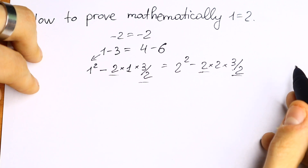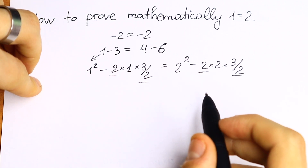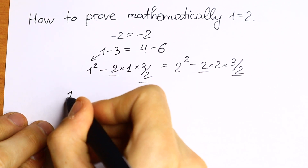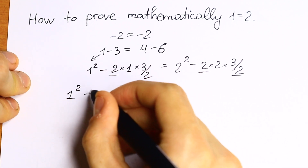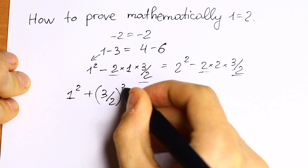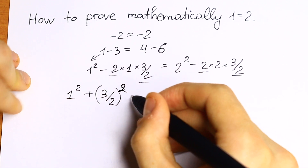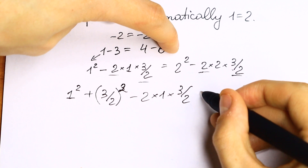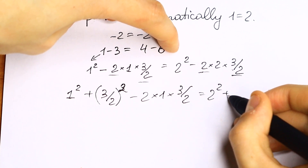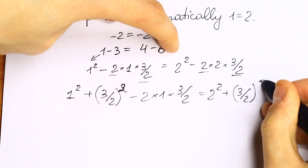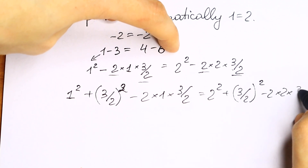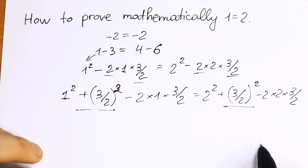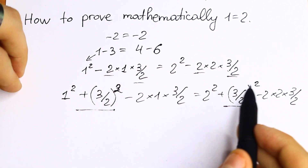Step by step — what we're going to do next. Take a look. We just need to add (3/2)² to both sides, so we'll have the same result. We'll have 1 squared, plus (3/2)² at both sides, minus 2 times 1 times 3/2. And we'll do the same thing on the right: 2 squared plus (3/2)² minus 2 times 2 times 3/2. So I just added (3/2)² to both sides — nothing changed, I just added it to both sides.